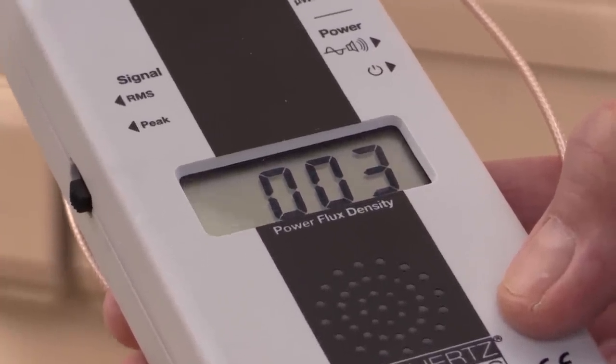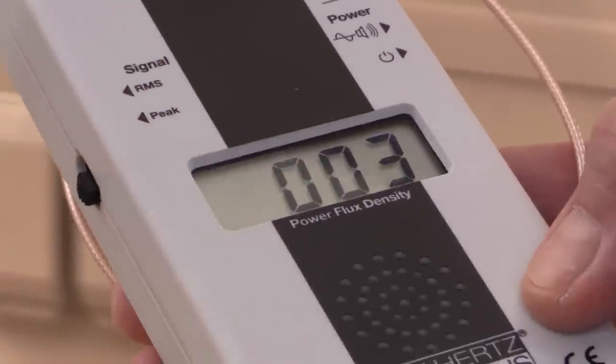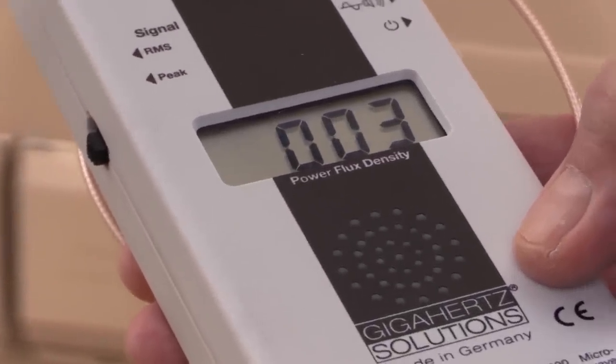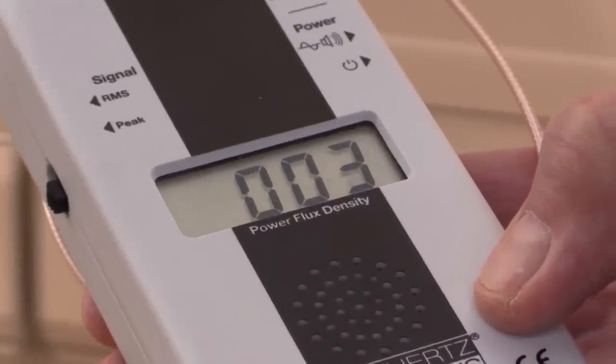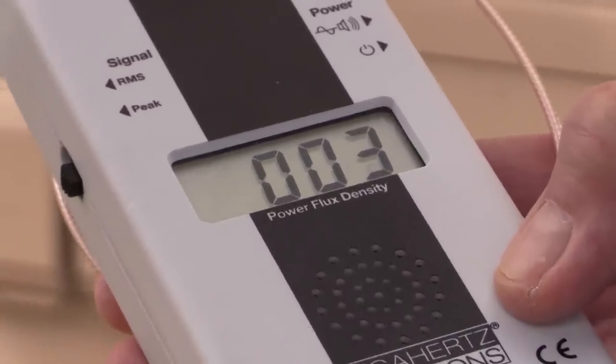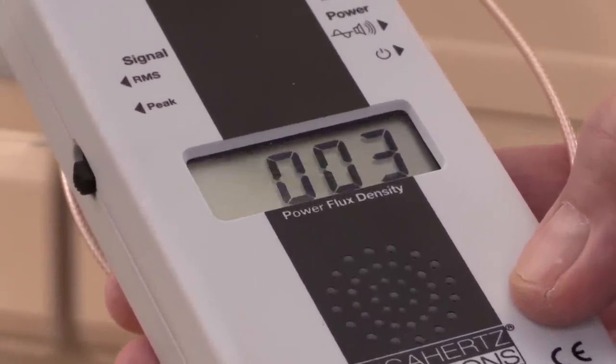What that means is, because we've dropped a few decimal points here, that's way over what those cell towers were. That's 38,900 microwatts per meter squared. The cell towers were around 1,800 at the top reading.